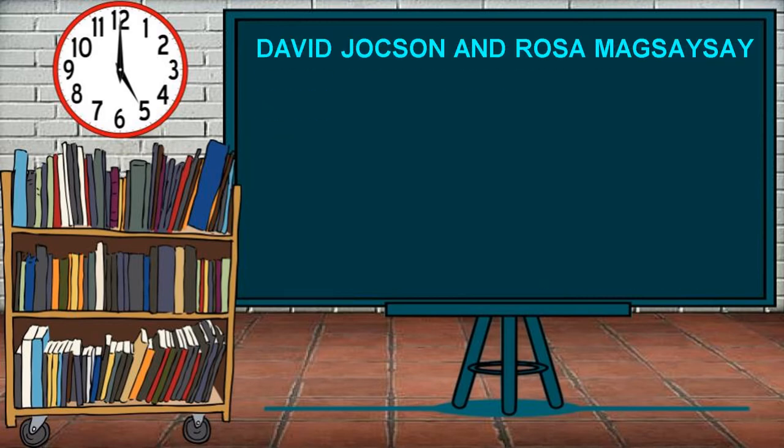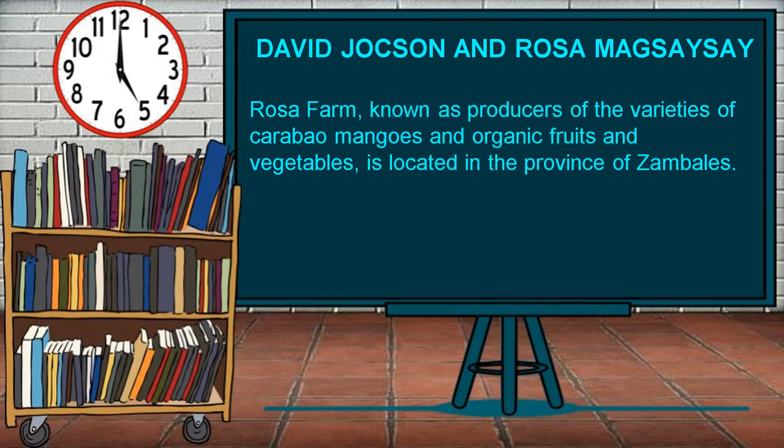David Jackson and Rosa Magsaysay — Rosa Farm, known as a producer of the best varieties of carabao mangoes and organic fruits and vegetables, is located in the province of Zambales. This 12.5-hectare farm was founded in 1920 by the couple David Jackson and Rosa Magsaysay. Before, it was developed as a rice field irrigated by a nearby river. During the eruption of Mount Pinatubo in 1991, the rice field was totally devastated and buried in deep ash. The grandchildren of David and Rosa rehabilitated the farm and began to develop the mango orchard. By 2011, the farm came to be known as Rosa Farms, managed by Ding and Nelda Sulweta.